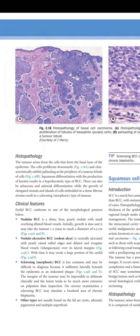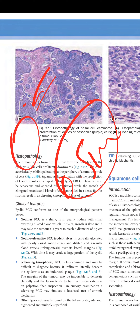Clinically, BCC can present as a nodule with rolled margins if ulcerated, with associated blood vessels. Nodular BCC is a shiny, firm, pearly nodule with small overlying dilated blood vessels. Growth is slow and it may take 1-2 years to reach a diameter of 0.5 cm. Nodulo-ulcerative BCC, also known as rodent ulcer, is centrally ulcerated with pearly, raised, rolled edges and dilated irregular blood vessels over its lateral margins.